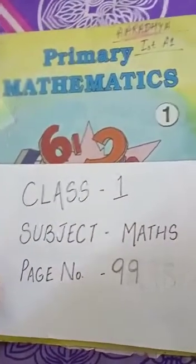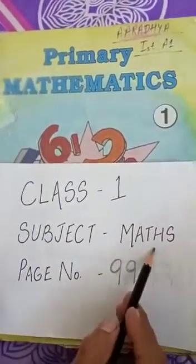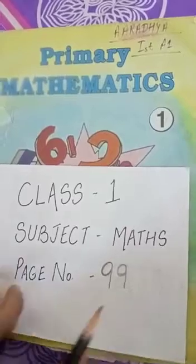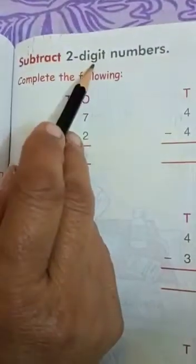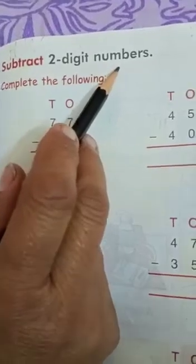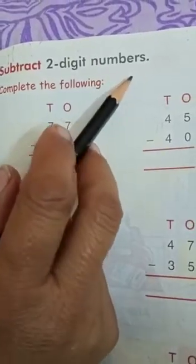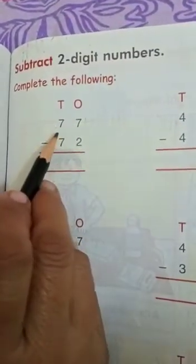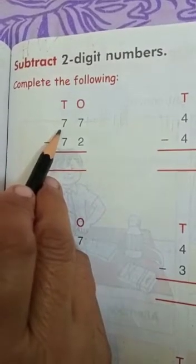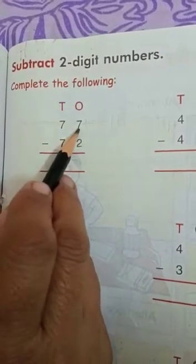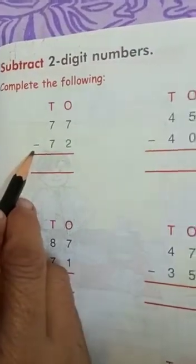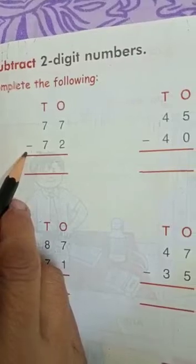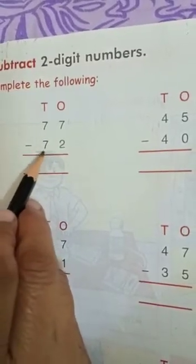Good morning students, take out your math book, page 99 — subtract two-digit numbers. Now we will do sums of subtraction. Look at this digit: this is 77, and this is a sign of subtraction: 72. You have to subtract 72 from 77.